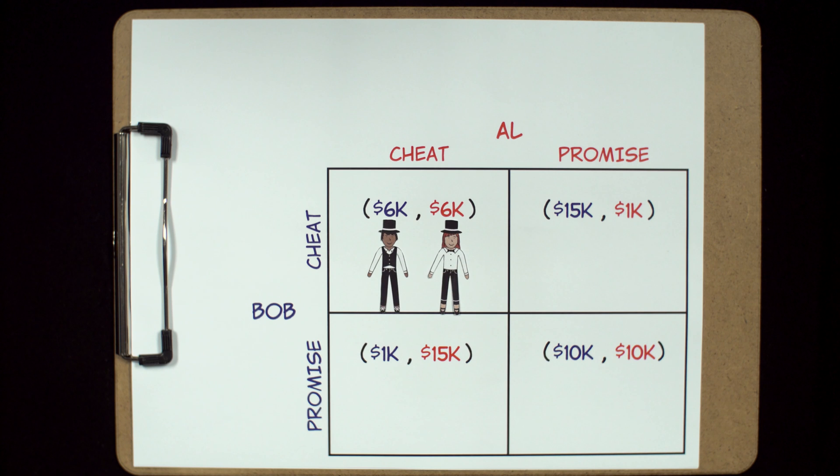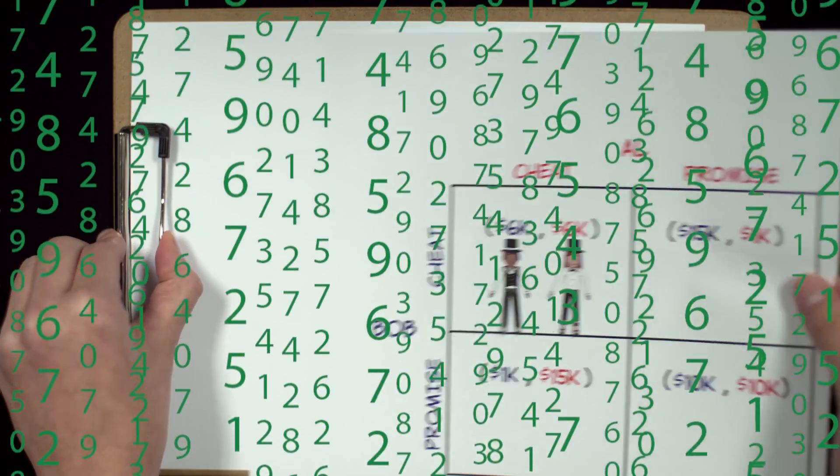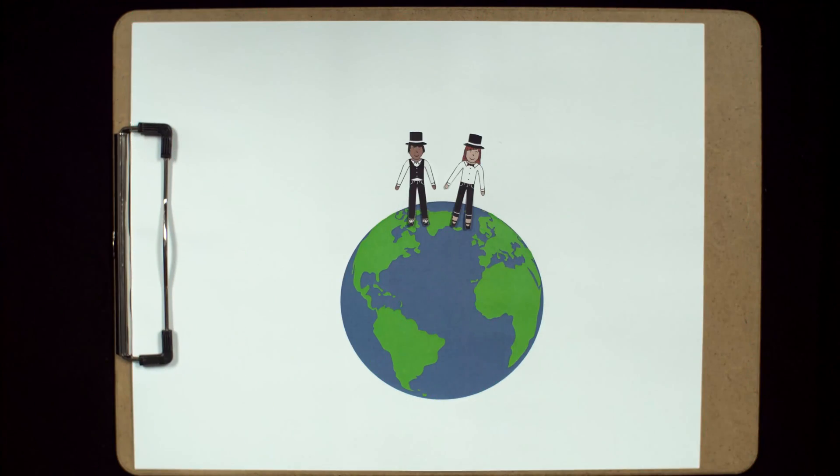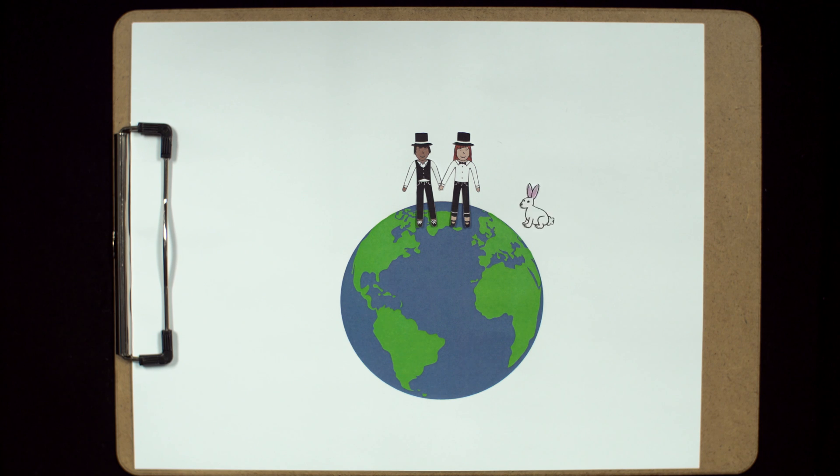Thus, it's the Nash equilibrium. Of course, there's a real world outside of the matrix. The world is much more complicated than this. People care about keeping promises, and they think about the long run rather than just week to week. So think of this example as just a simple but powerful starting point to better understand human decision-making.